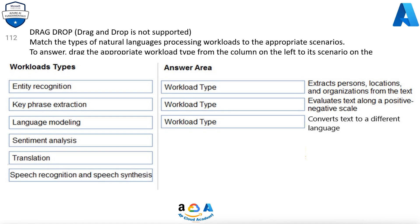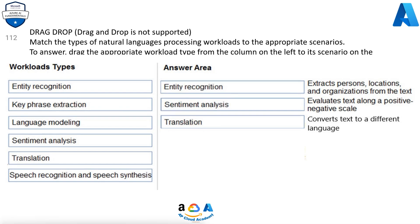Workload types: Entity recognition, Key phrase extraction, Language modeling, Sentiment analysis, Translation, Speech recognition. Entity recognition extracts persons, locations, and organizations from the text. Sentiment analysis evaluates text along a positive-negative scale. Translation converts text to a different language.